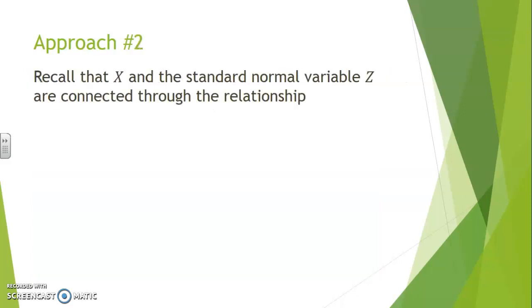In approach number two, we will make use of the fact that X and Z are related. If X can be obtained from a standard normal law, then having information about our standard normal law is sufficient to find bounds for X. We have seen in the previous video that Z has 90% of its area between Z 5% and minus Z 5%.